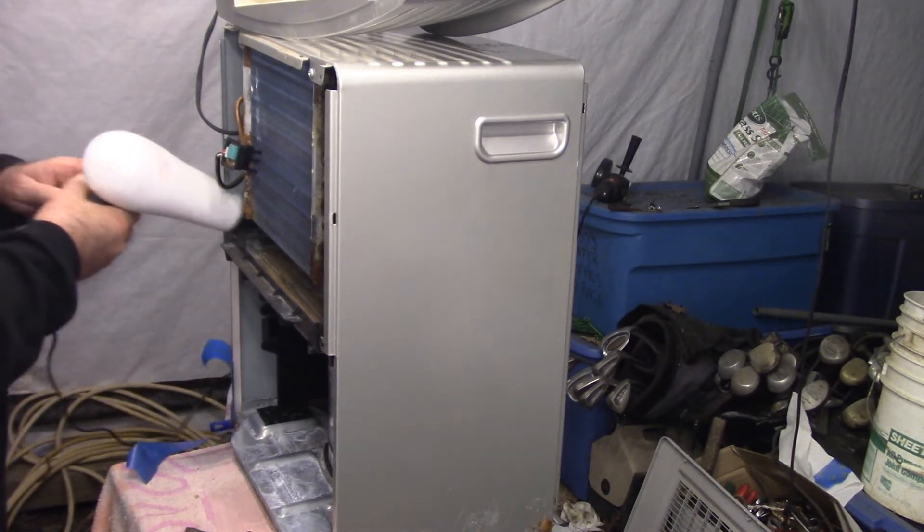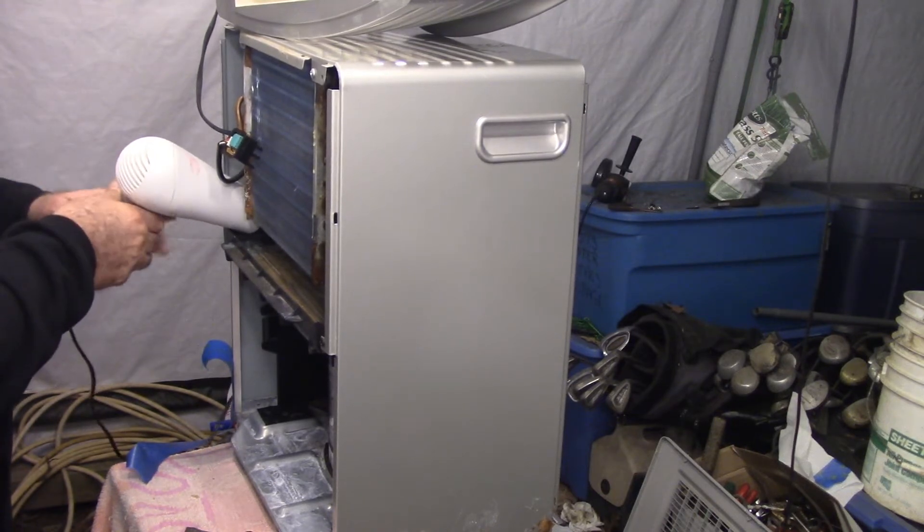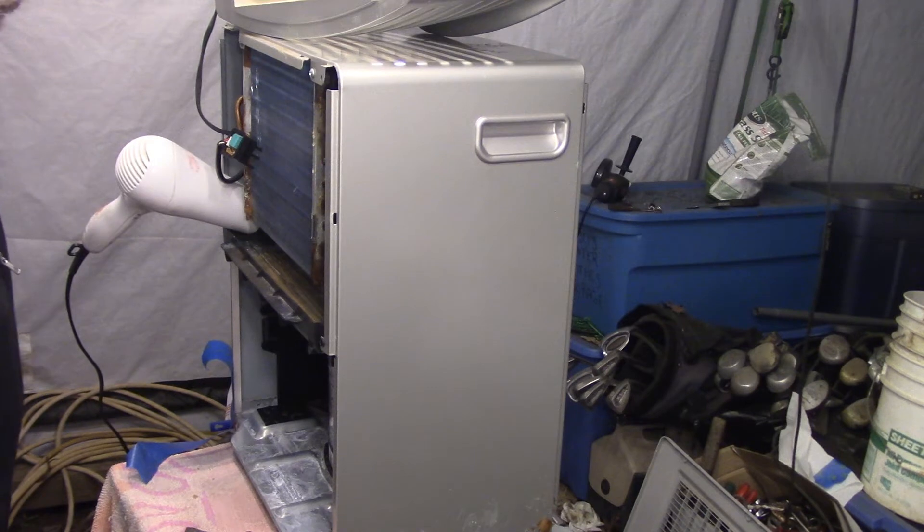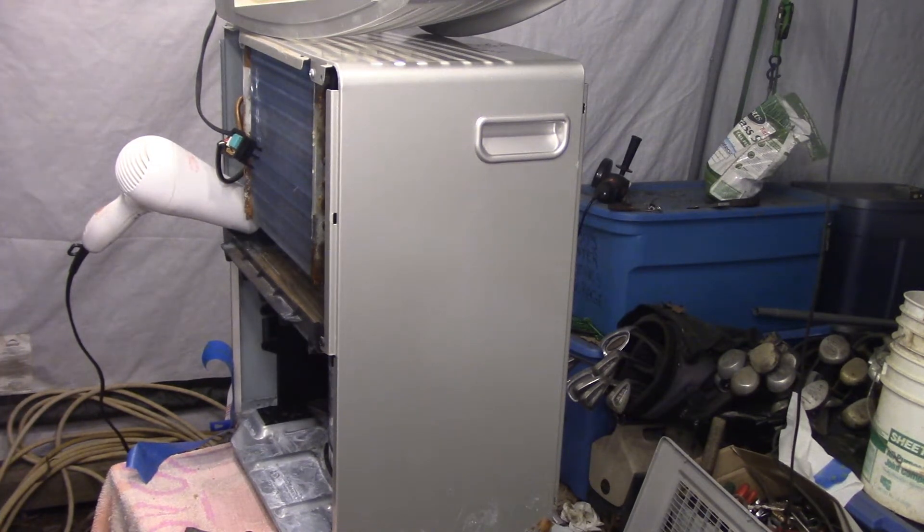This poor man's heat gun, which is a Sunbeam hair dryer that I bought at CARM, which is the Knox Area Rescue Ministry sales store. People donate and then they sell that stuff and raise money for the rescue ministry around Knox County.